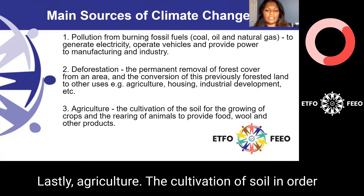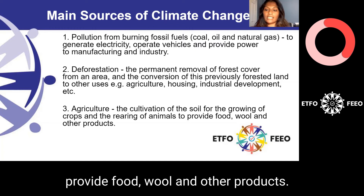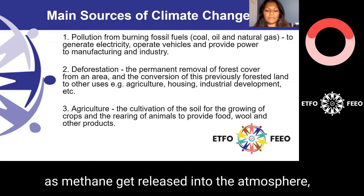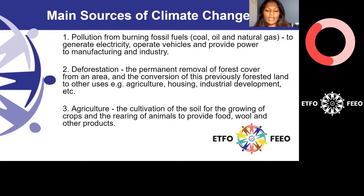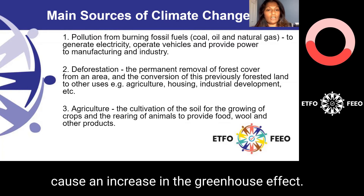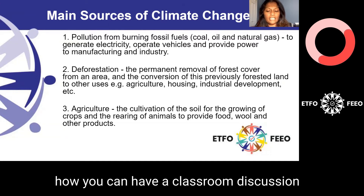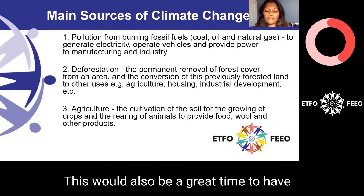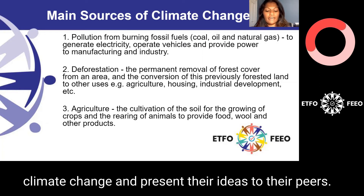Lastly, agriculture — the cultivation of soil to grow crops and livestock to provide food, wool, and other products. When this happens, more greenhouse gases such as methane get released into the atmosphere, causing global warming and climate change. After providing this introductory content to students, I will provide the opportunity for them to reflect on what other factors can cause an increase in the greenhouse effect. Please pause the video and consider how you can have a classroom discussion about other potential sources of climate change. This would also be a great time to have students research different sources of climate change and present their ideas to their peers.